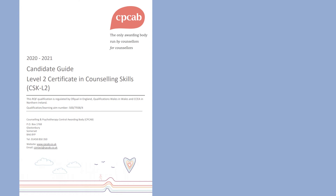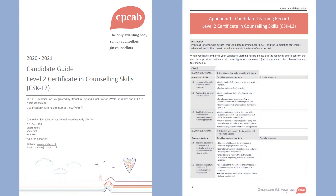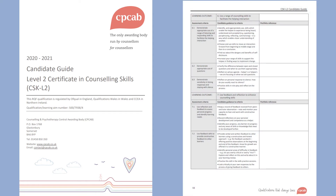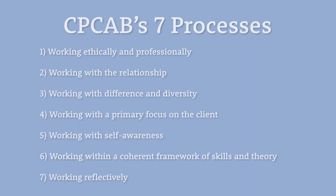Every CPCAB learner will receive a candidate guide containing their learning outcomes and assessment criteria. Every level will have seven learning outcomes, and these learning outcomes always connect to one of CPCAB's seven processes — a framework set out by CPCAB which applies to all levels and qualifications.